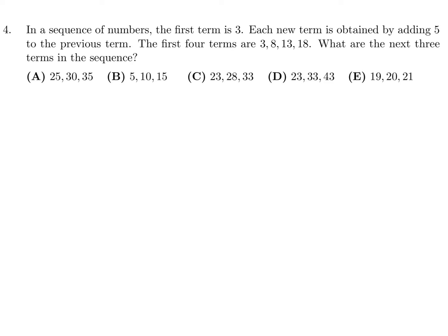Question 4: In a sequence, the first term is 3 and each new term is obtained by adding 5 to the previous term. The first 4 terms are 3, 8, 13, 18. You get the next term by adding 5: add 5 to 18 and you get 23; add 5 to 23 and you get 28; add 5 to 28 and you get 33. So the next 3 terms are 23, 28, 33 — choice C for number 4.